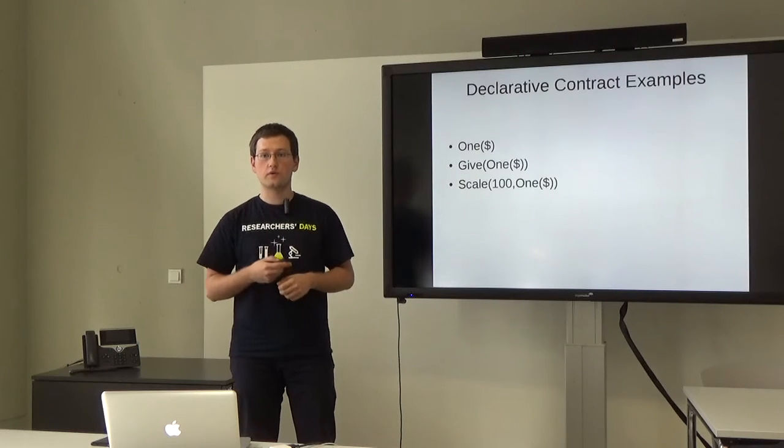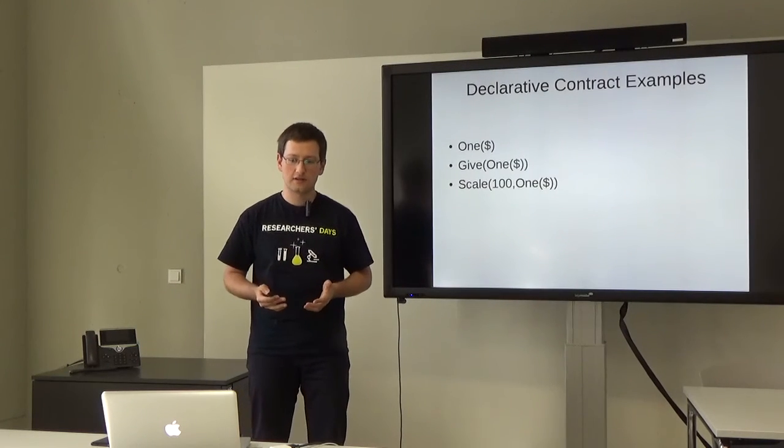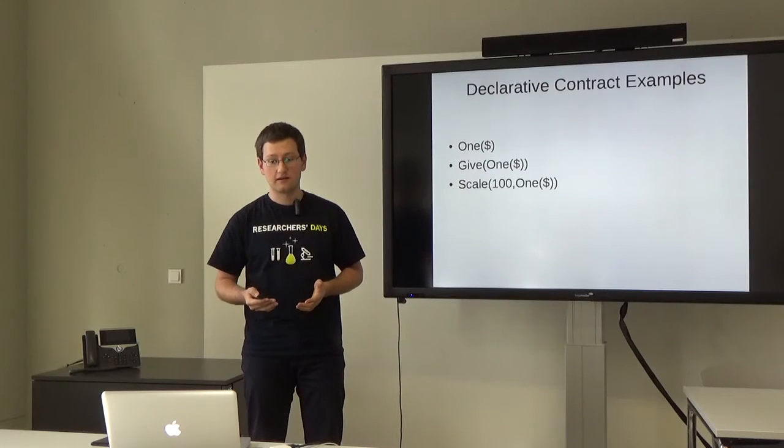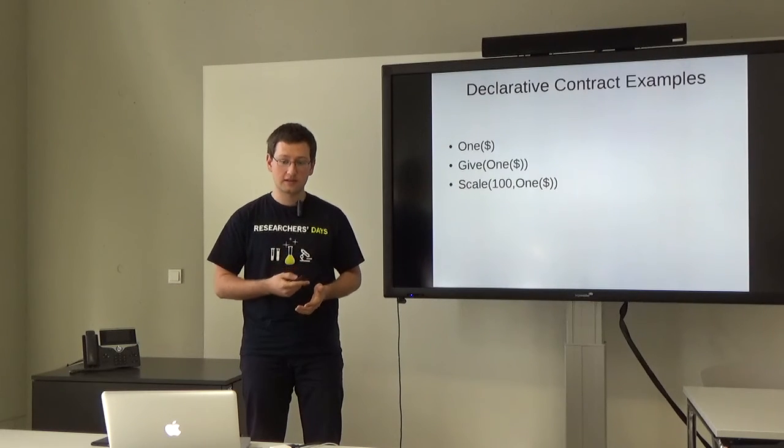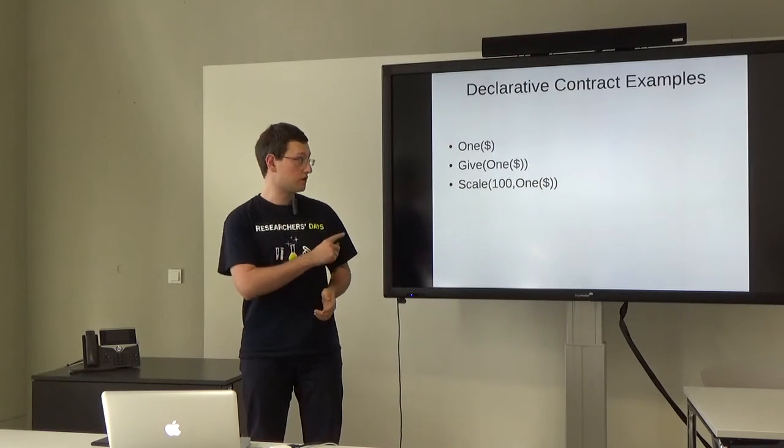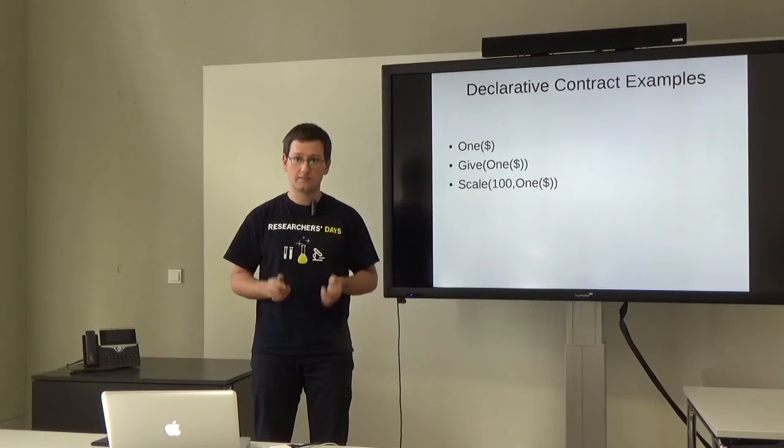Another example, what if we want to send one hundred dollars? We apply the scale modifier with the parameter one hundred. That means all the payments in the underlying contract, which is one here, will be multiplied by one hundred.